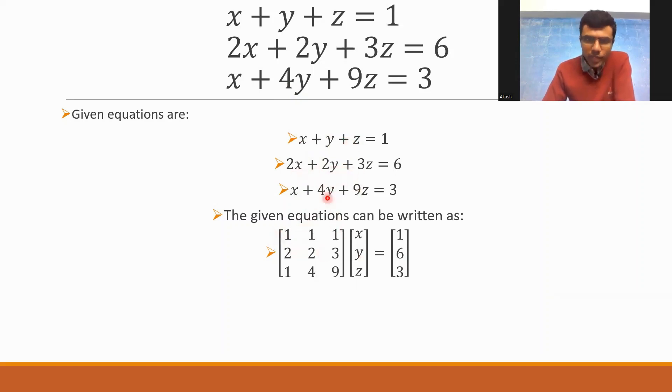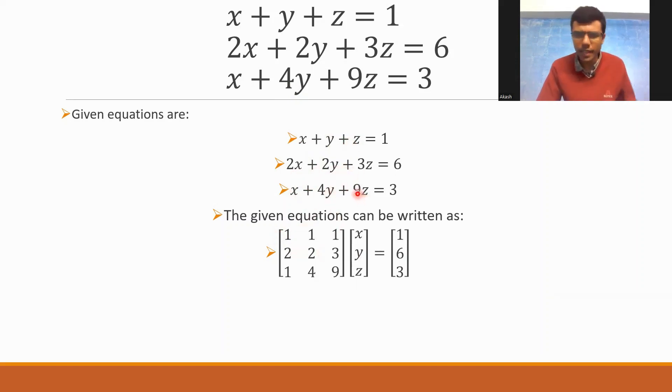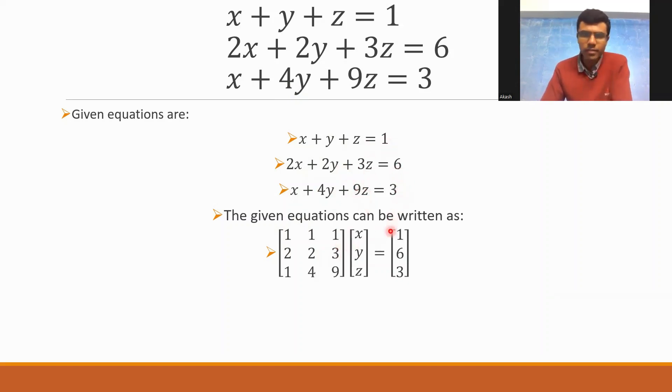Then 2, 2, 3. And then 1, 4, 9. That's it, nothing new. Into X, Y, Z is equal to 1, 6, 3. I hope things are clear until here.